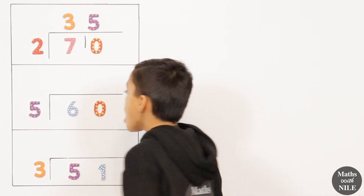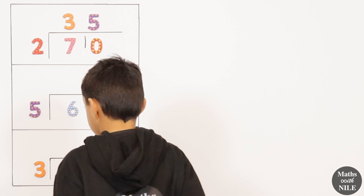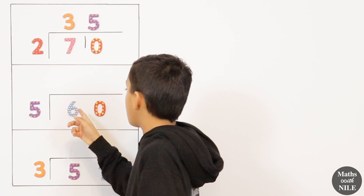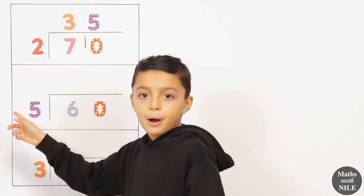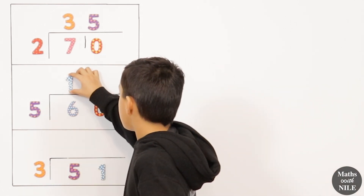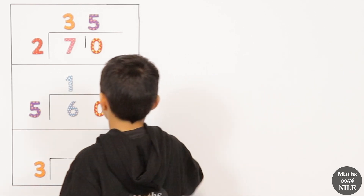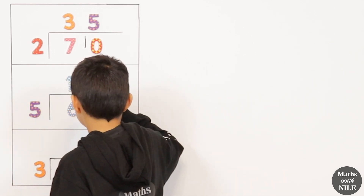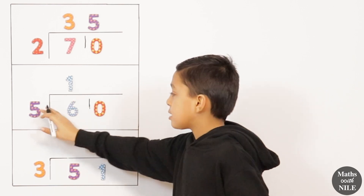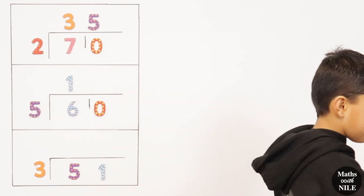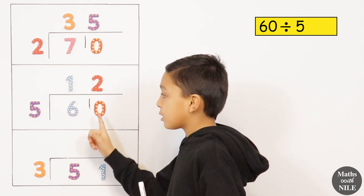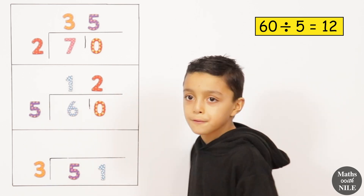Next question: 60 divided by 5. We do 6 divided by 5, which equals 1 remainder 1. So we put our remainder here and now we have 10. Then we do 10 divided by 5, which equals 2. So 60 divided by 5 equals 12.